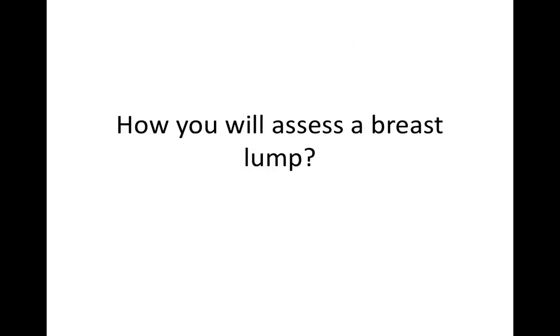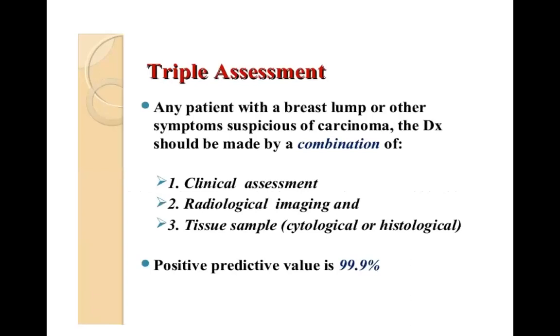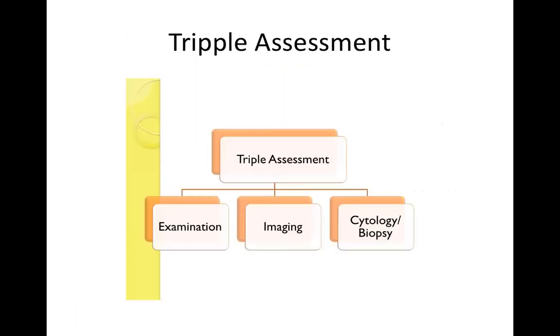So how will you assess a breast lump? You will assess a breast lump via triple assessment. Triple assessment is a combination of clinical assessment, certain radiological investigations, and tissue sampling. By combining all three, about 99.9% of the time you will reach an accurate diagnosis. Triple assessment has three components: clinical examination, imaging, and cytology or biopsy.